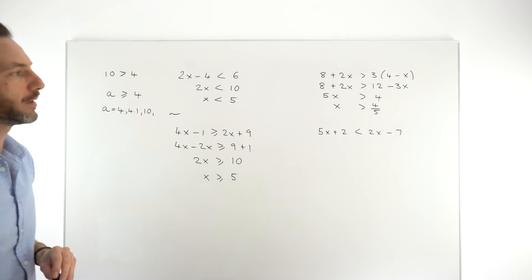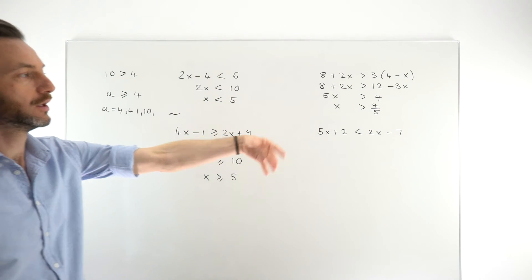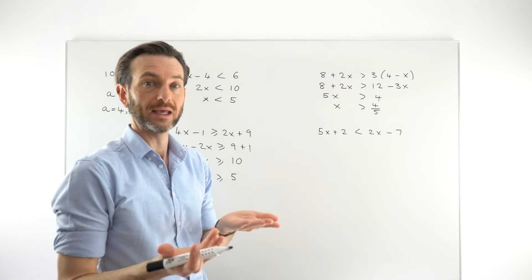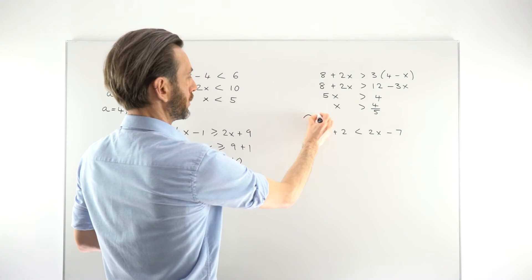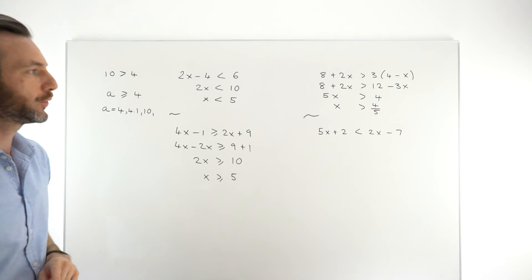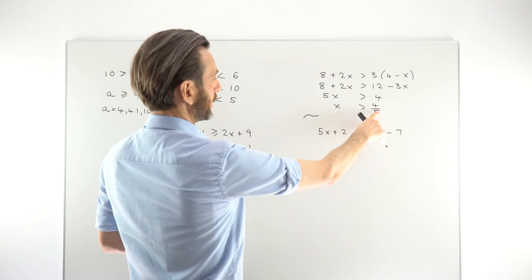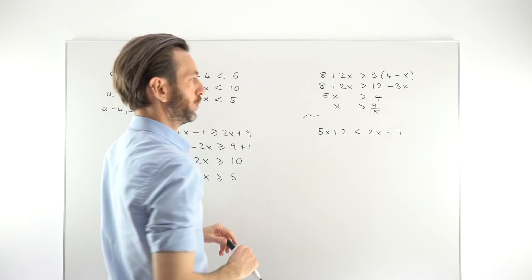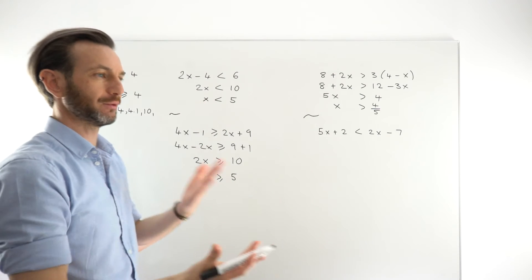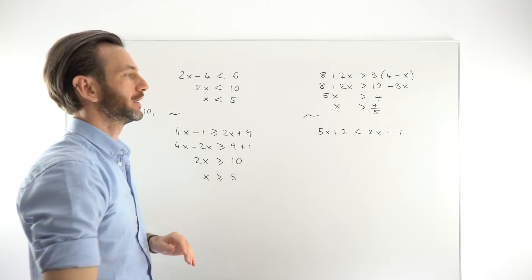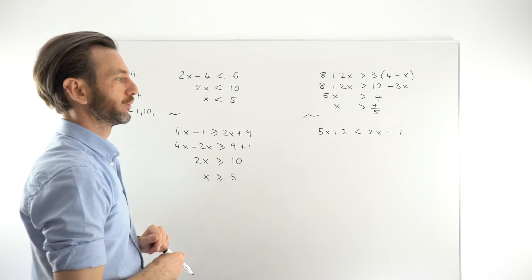So that one came out to be a fraction. Doesn't matter if it's a whole number or a fraction. Could be a decimal. Just like equations, you've got all those possible number types as your solutions. So x would have to be strictly greater than that number. So that number is just a little less than 1. So x could be 1, 2, 3, or any decimal number in between those, or 1,000 or anything bigger than 4 over 5.